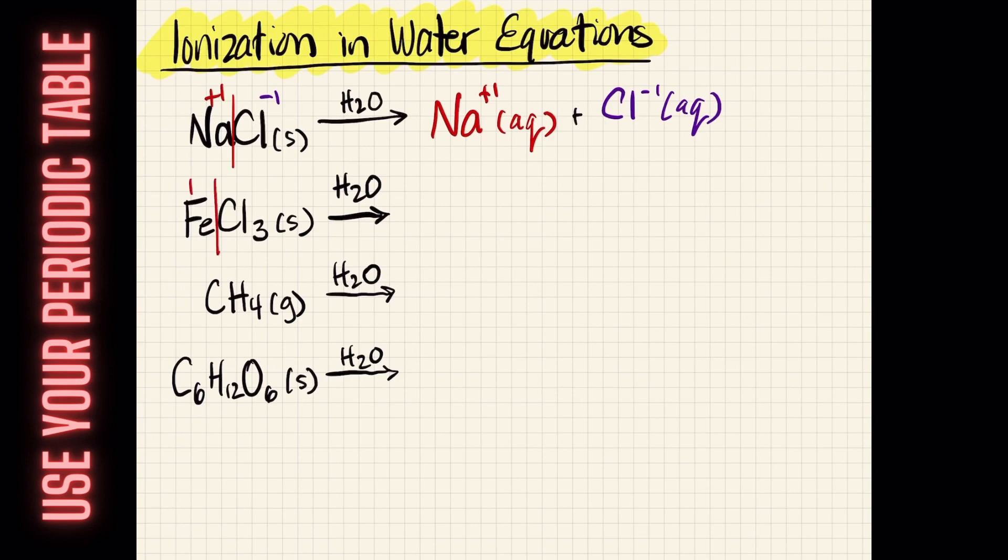Next up, we have iron 3 chloride. We can see the iron has a positive 3 charge, while our 3 chlorines each have a negative 1. These are going to ionize into our solution, producing one ion of iron 3, and we're also going to be producing 3 moles worth of chloride ions.